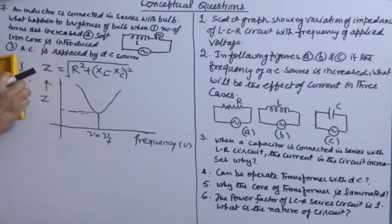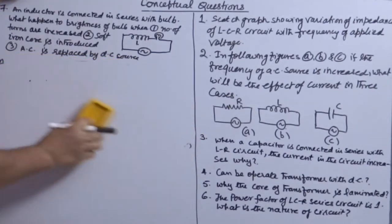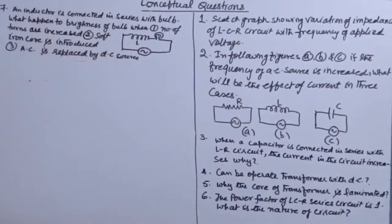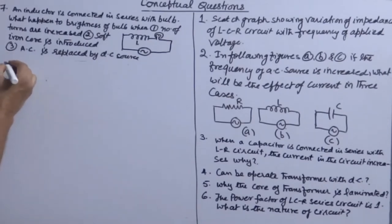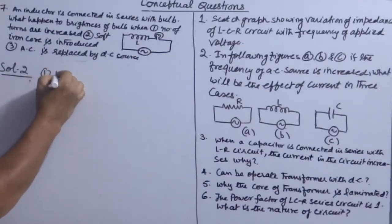For question number two: in the following figure ABC, frequency of AC source is increased. What will be the effect on the current in each case? In the first case, there is no effect.